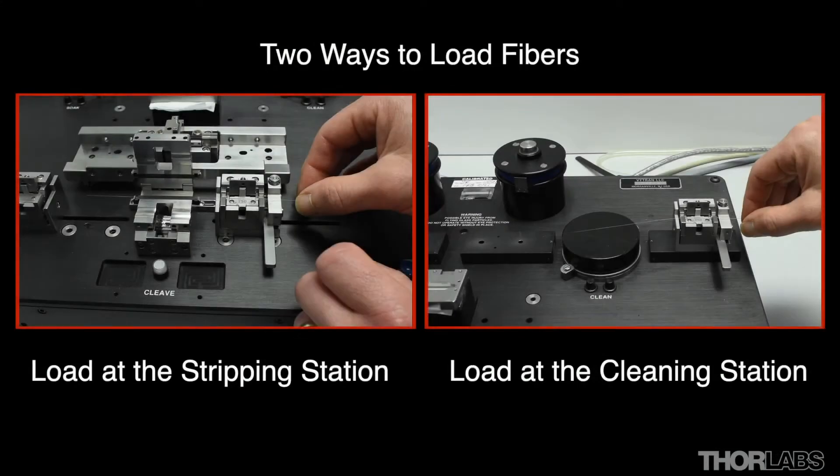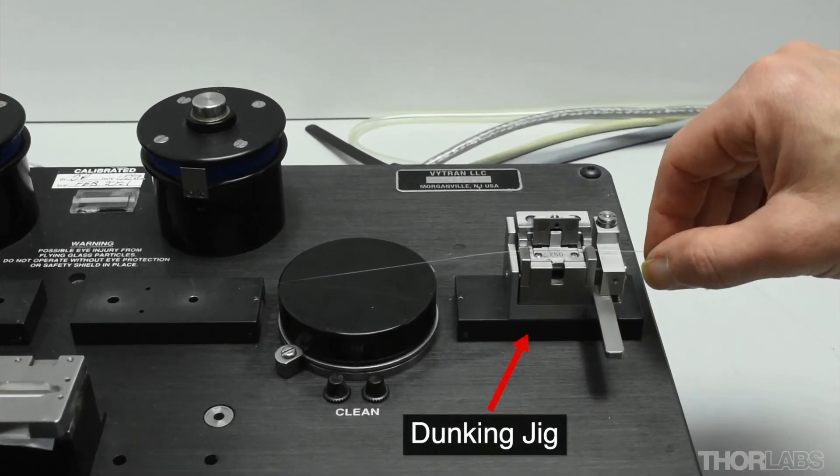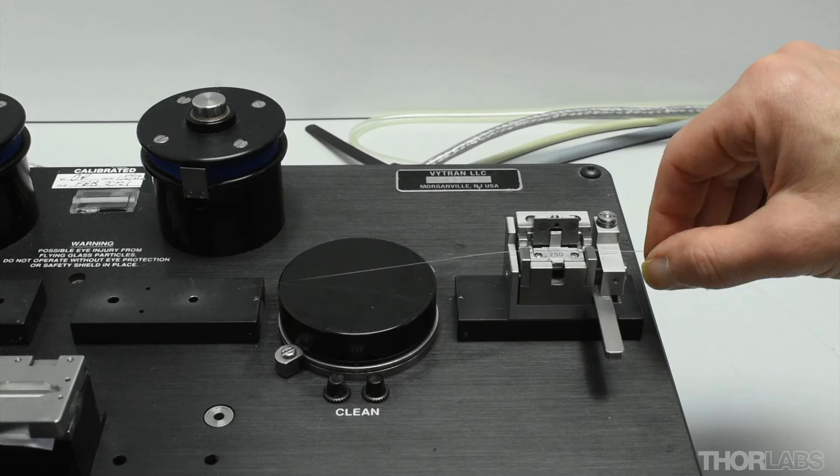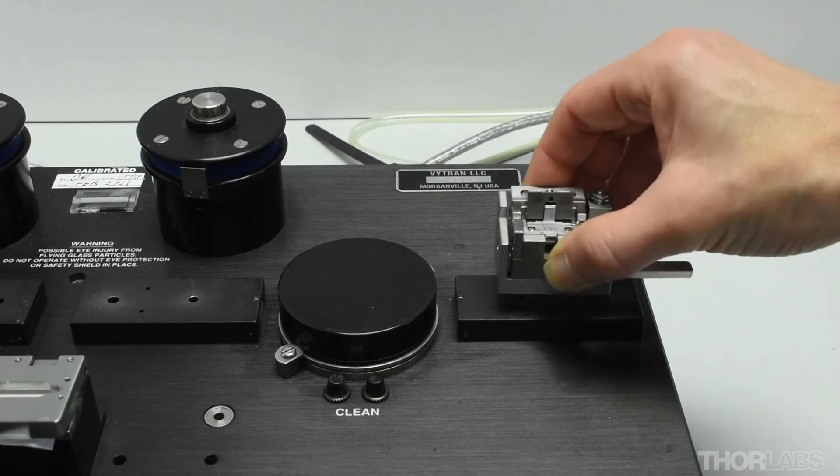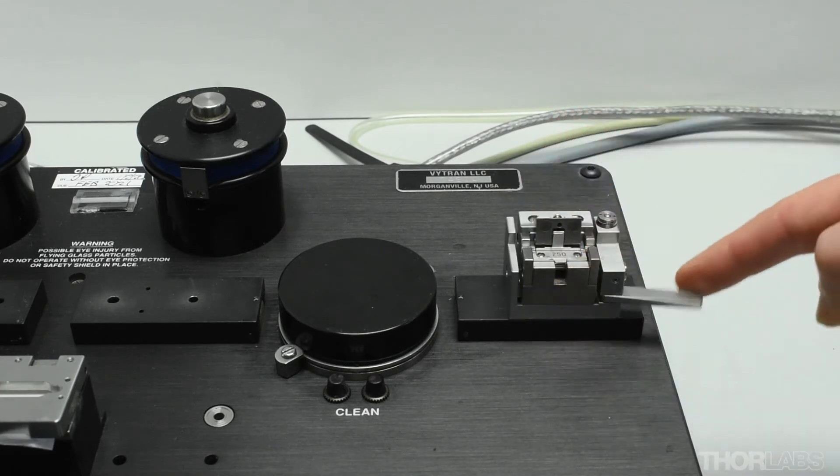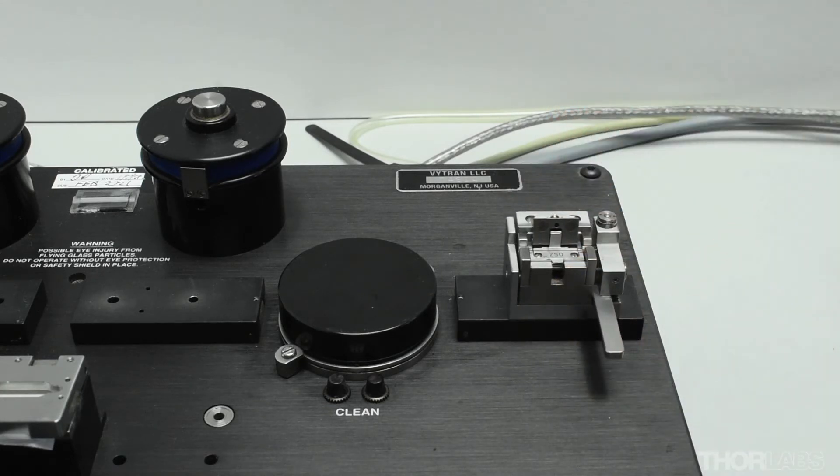The second method is to load the fibre using the dunking jig at the cleaning station. The fibre hangs in free space using this method, so sometimes it is easier to determine if the fibre curl is in the correct direction. Place the fibre holding block at the dunking jig. This will activate the vacuum. Move the cleave lever forwards.